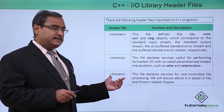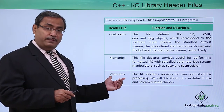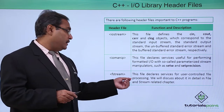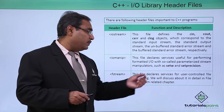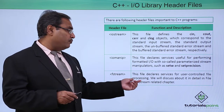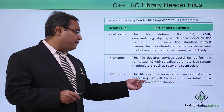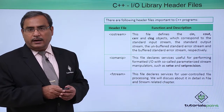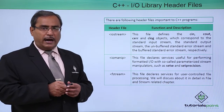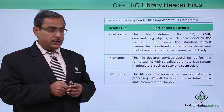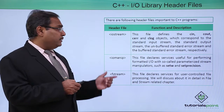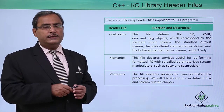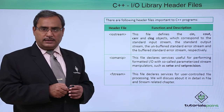Next is fstream. This file declares services for user-controlled file processing, which we will discuss in the file I/O chapter. These are the main three header files which we include for I/O processing.